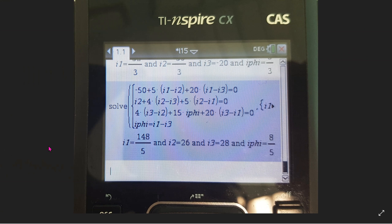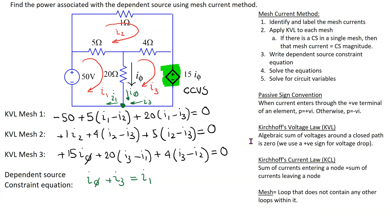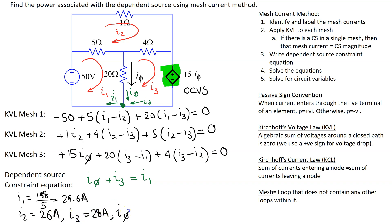We can use a calculator to solve this system of linear equations, and using the solve command, the solution is obtained as shown. I1 is 148/5, which is 29.6 amps. I2 is 26 amps. I3 is 28 amps. And I phi is 1.6 amps.